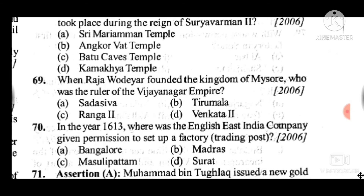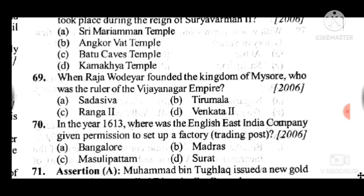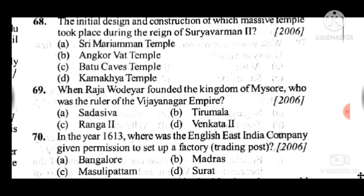Question 70: In the year 1613, where was the English East India Company given permission to set up a factory/trading post? Answer to question 70 is D: Surat.